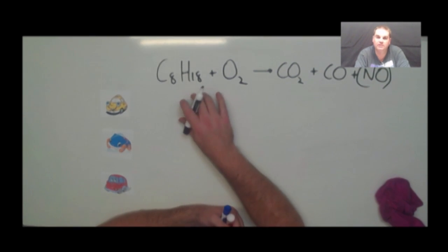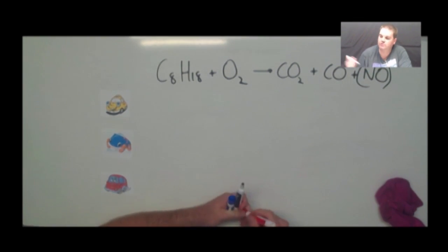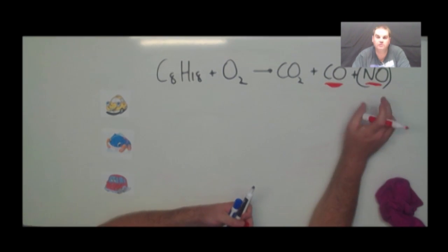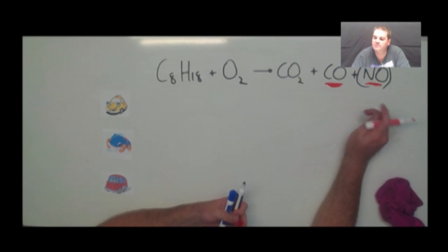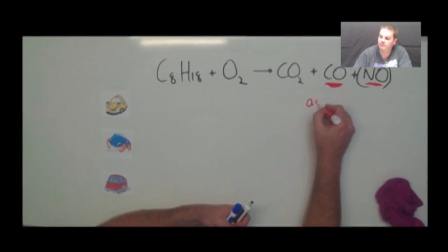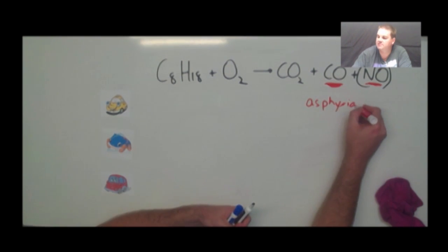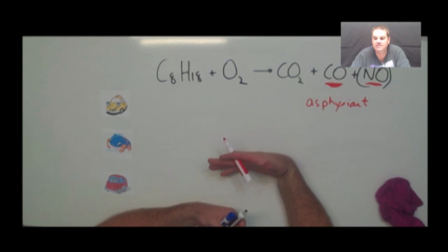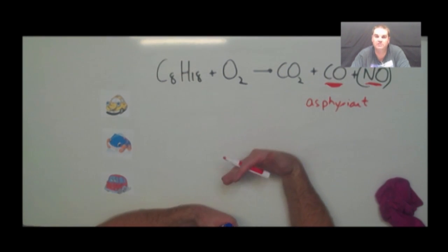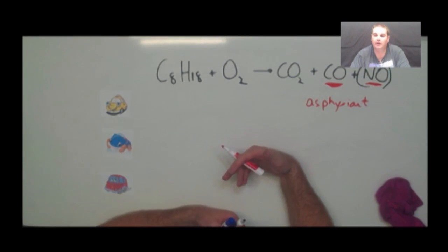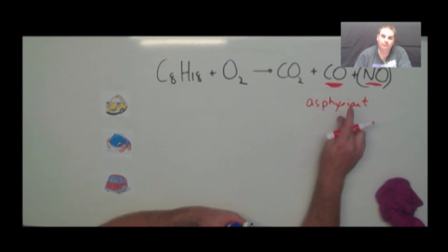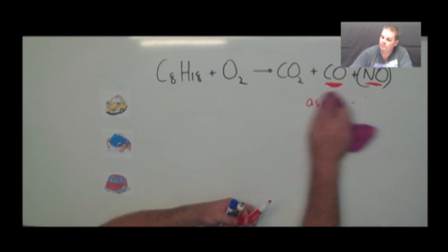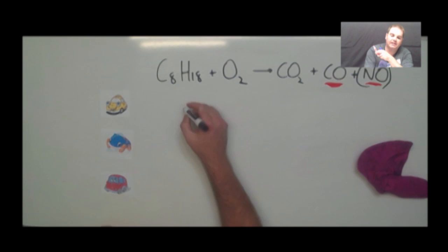These are the two we have a problem with. Nitrogen monoxide forms photochemical smog and those respiratory irritants. Carbon monoxide is what's called an asphyxiant — something that stops oxygen being absorbed into your bloodstream. People who die from carbon monoxide poisoning often turn blue because they haven't got oxygen into their body to form oxyhaemoglobin, which is red in colour. So we want to get rid of that because it stops us from breathing properly as well.